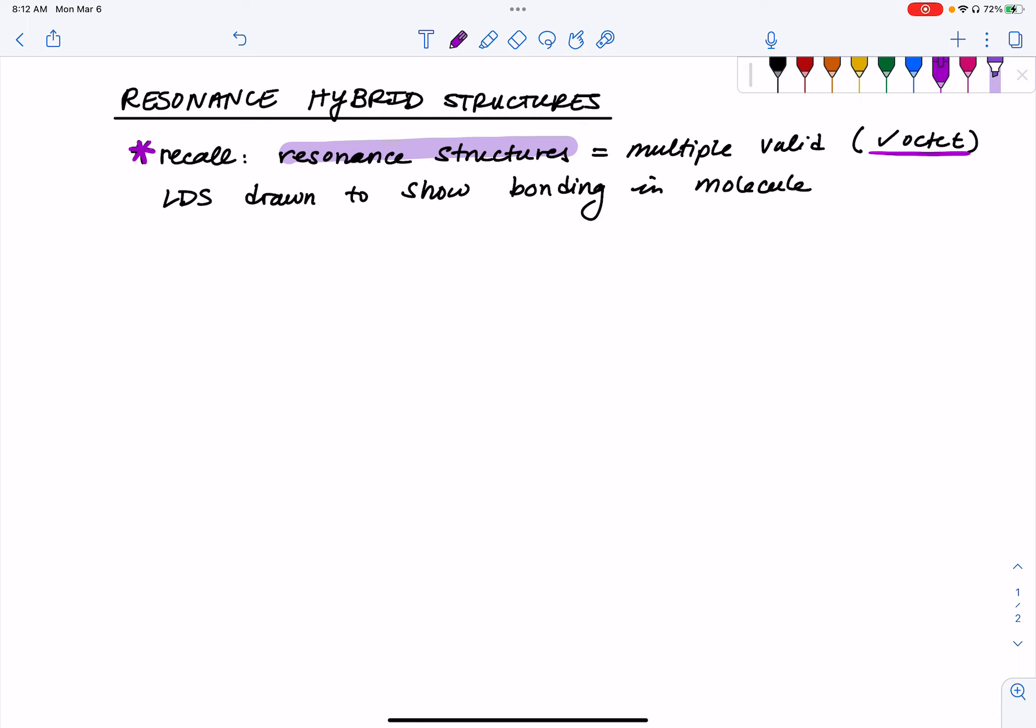Specifically, this happens when we are drawing double or triple bonds. And if you remember, when discussing these resonance structures, we recognize that some resonance structures are more stable than others. And this is according to our formal charge calculations to verify the stability of a particular resonance structure.